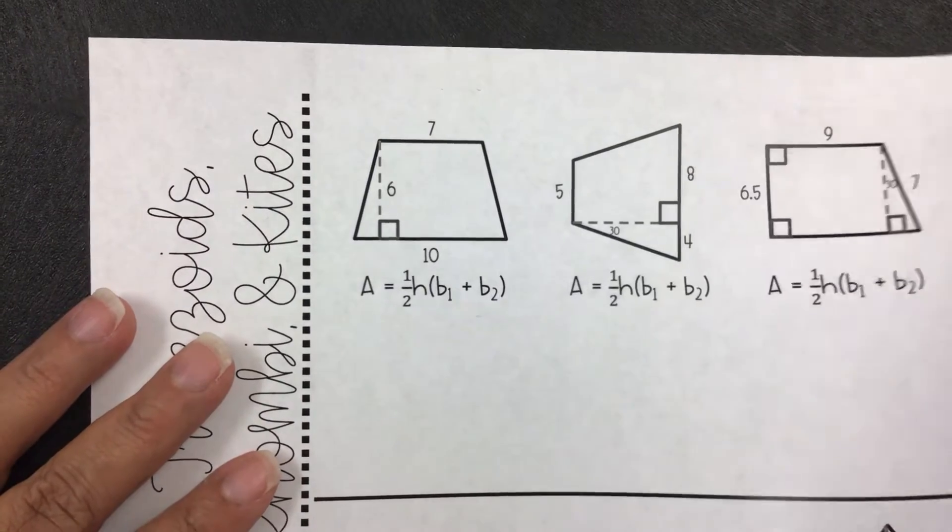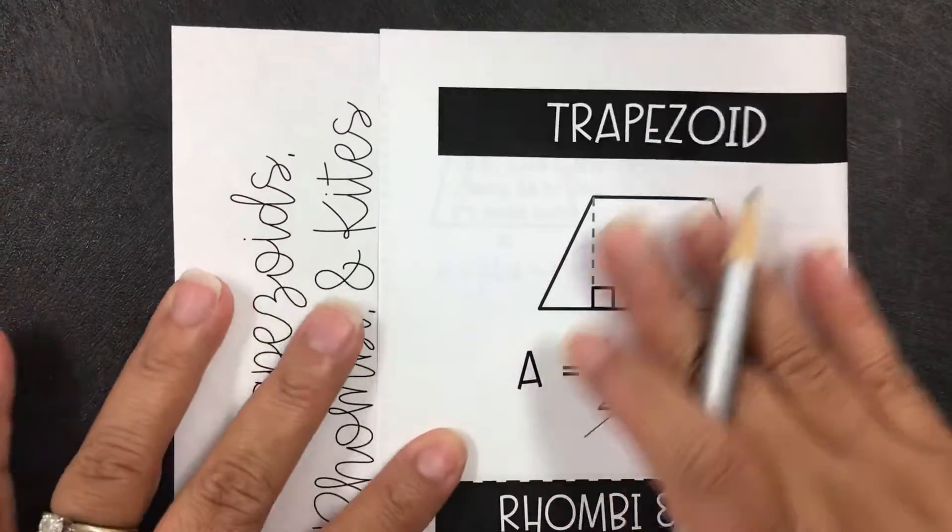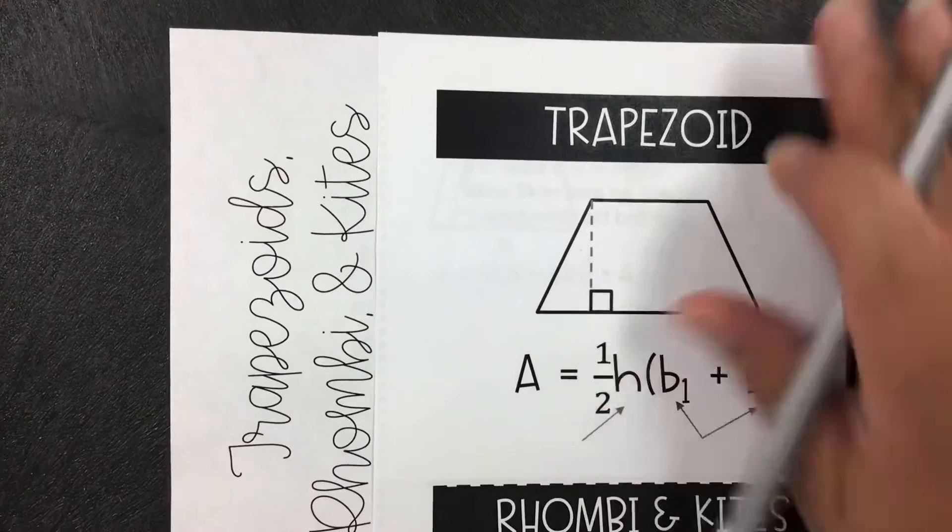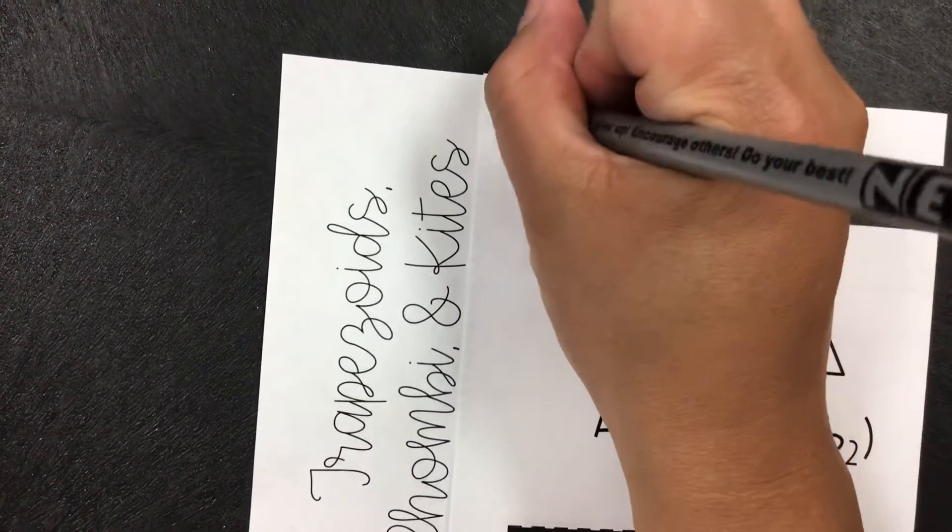This is a video for section 11.2. We're finding the areas of trapezoids, rhombus, and kites.